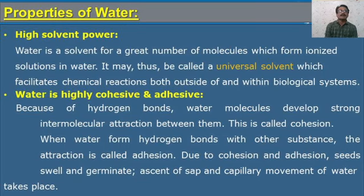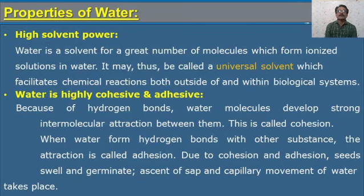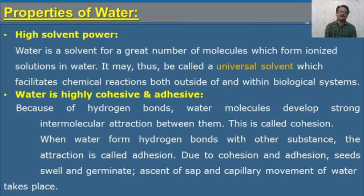Water is highly cohesive and adhesive. Because of hydrogen bonds, water molecules develop strong intermolecular attraction between them, and this is called cohesion. When water forms hydrogen bonds with other substances, the attraction is called adhesion. Due to cohesion and adhesion, seeds swell and germinate, and ascent of sap and capillary movement of water takes place.